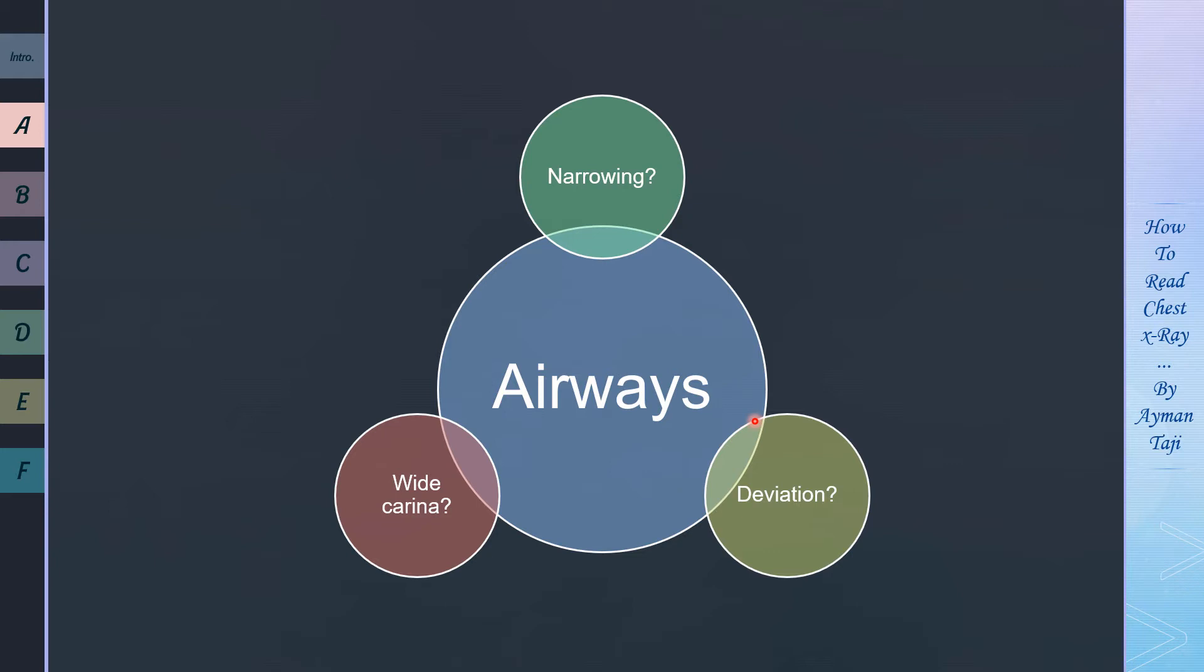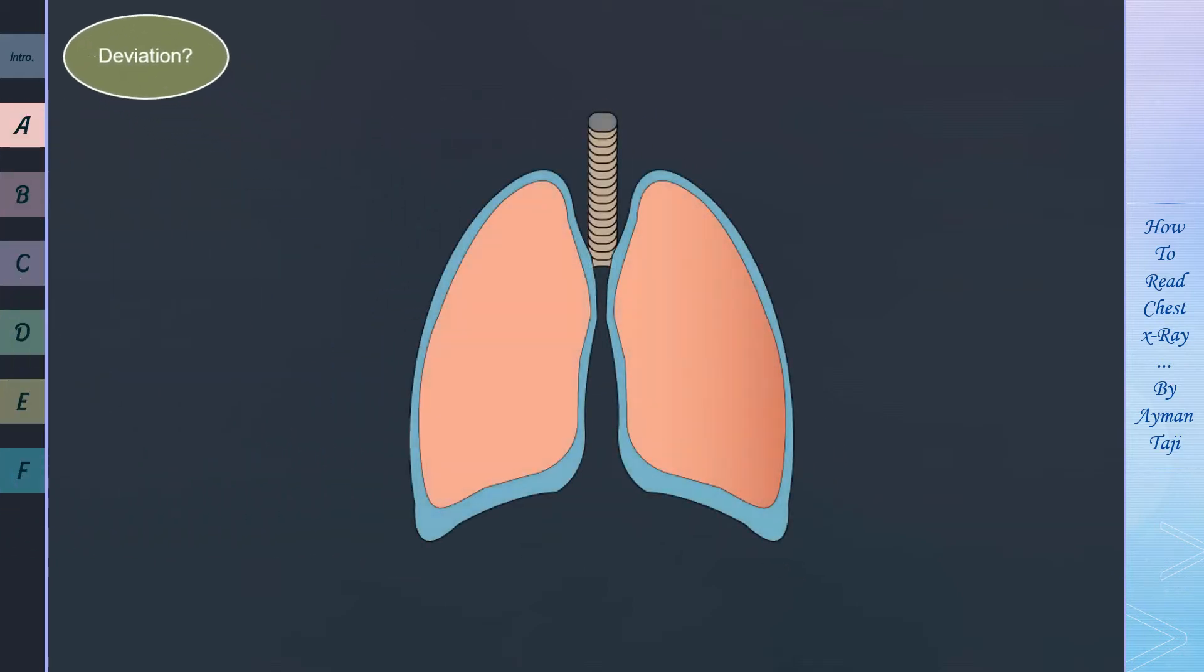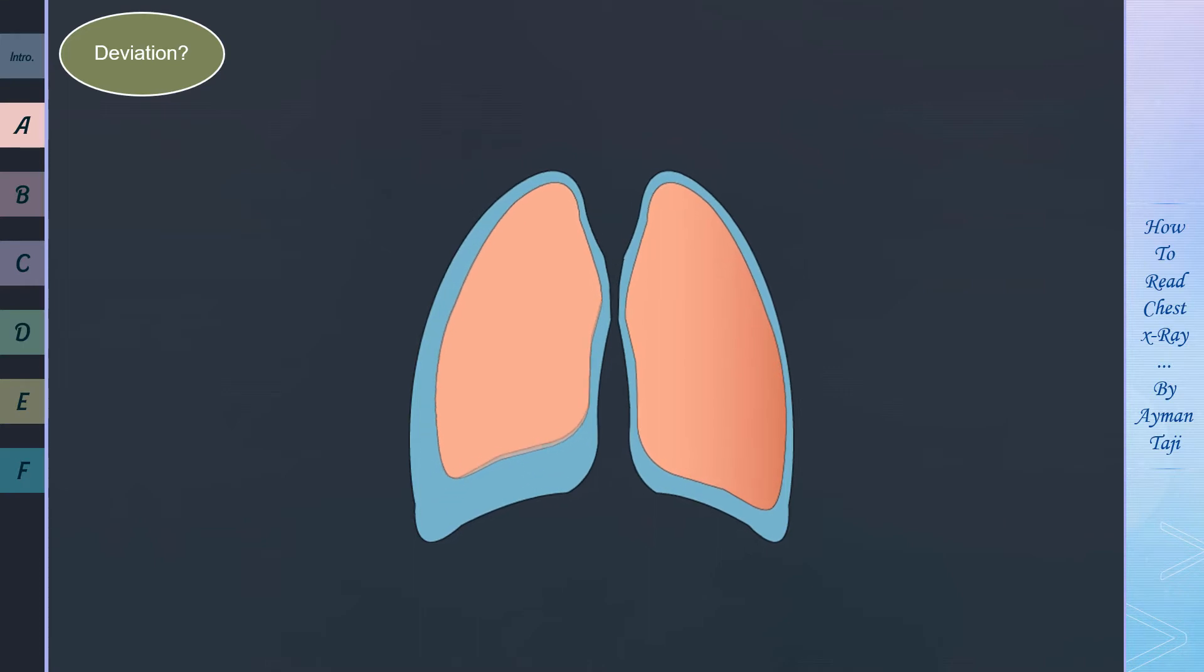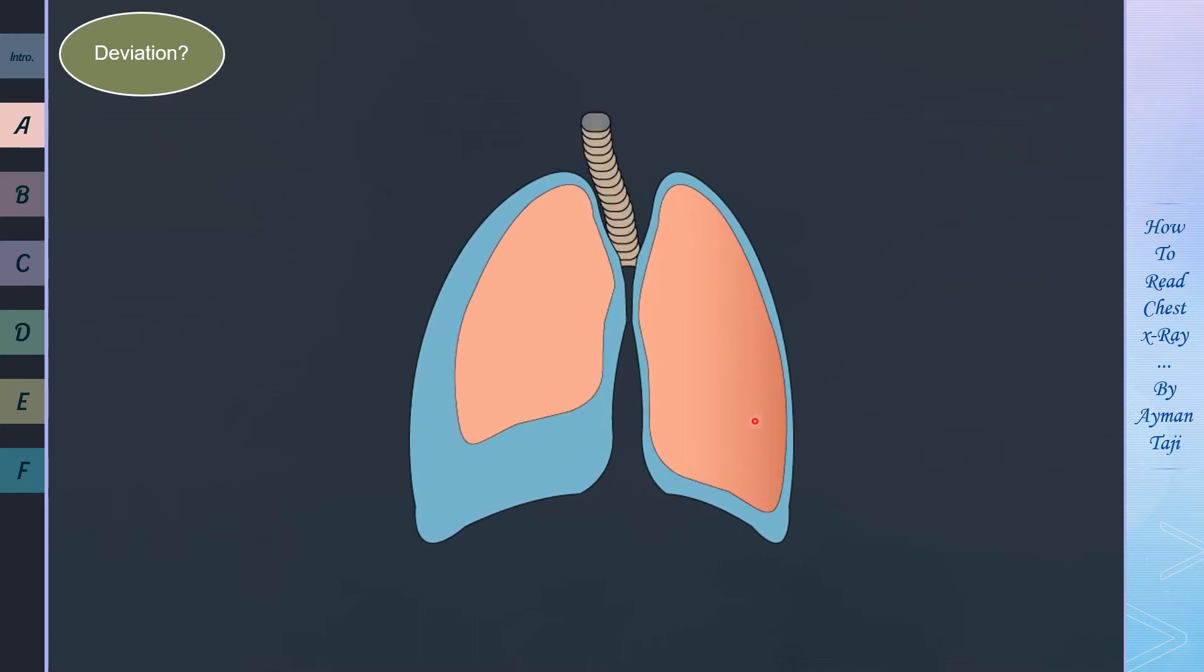Moving on to the second airway abnormality that can be seen on X-ray, which is airway deviation. Usually trachea is situated in a midline position. However, when tracheal deviation is present, the trachea will be displaced in the direction of less pressure, meaning that if one side of the chest cavity has an increase in pressure, let's say the right side here, then the trachea will shift towards the opposite one.